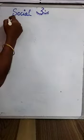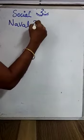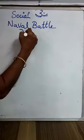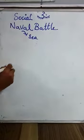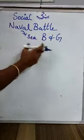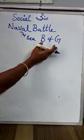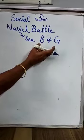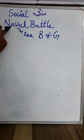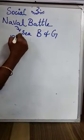Now today we will go and see about the naval battles. Naval battles — that is the battle that happened in the sea. That is the naval battle between Britain and Germany. So these two countries are well versed in naval warfare. Germany was also popular for the naval. This happened in the year 1916.